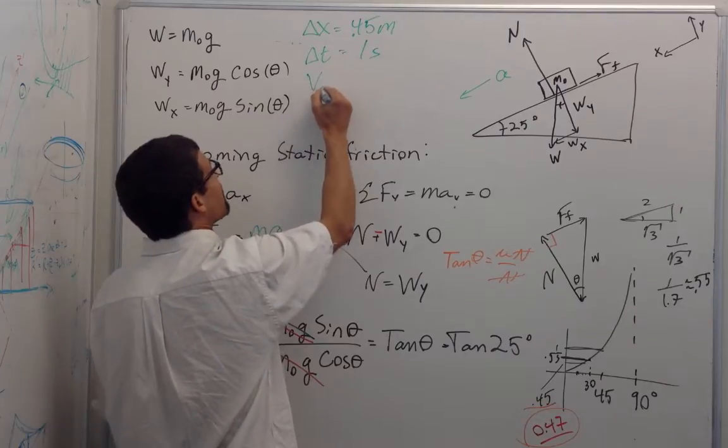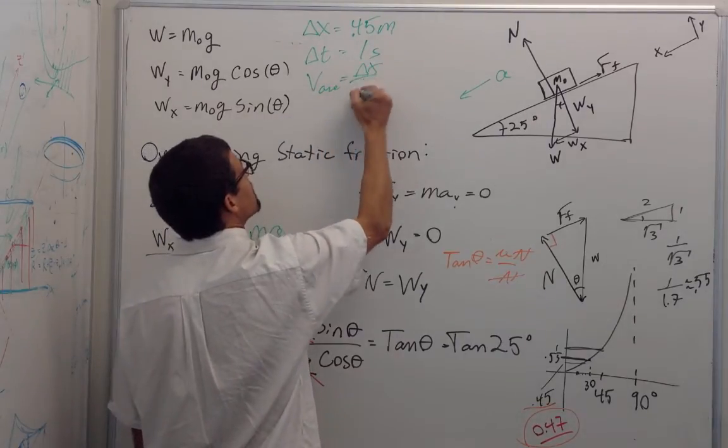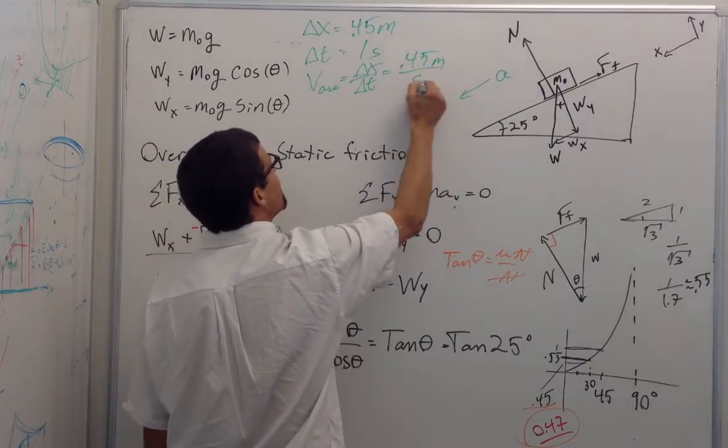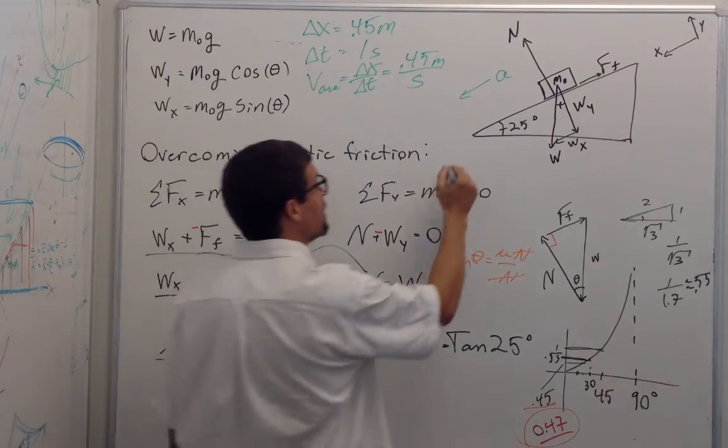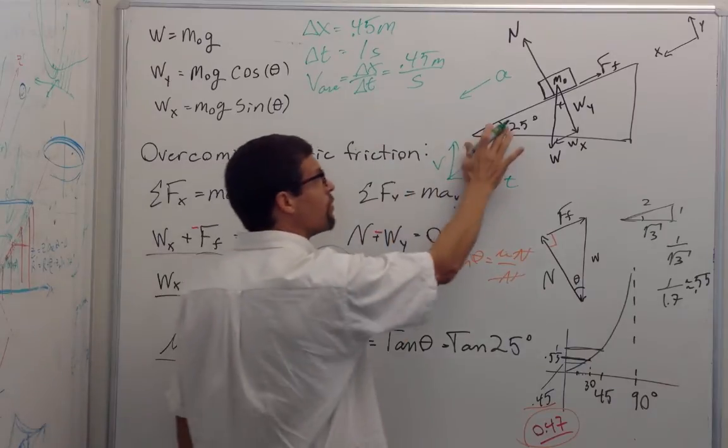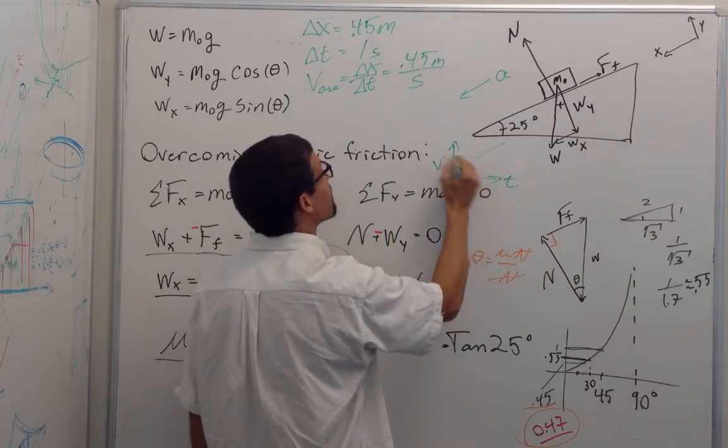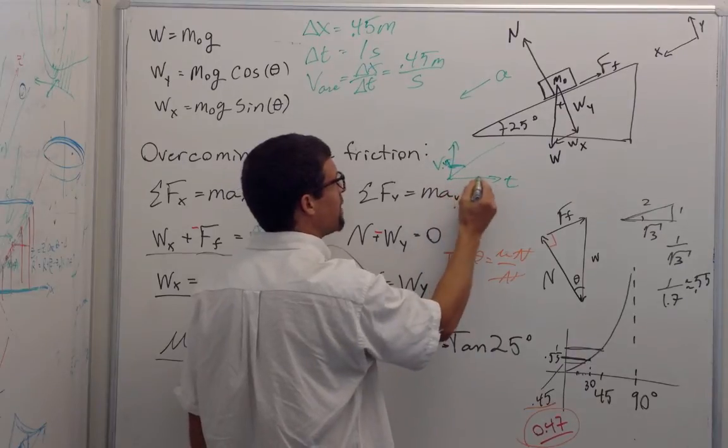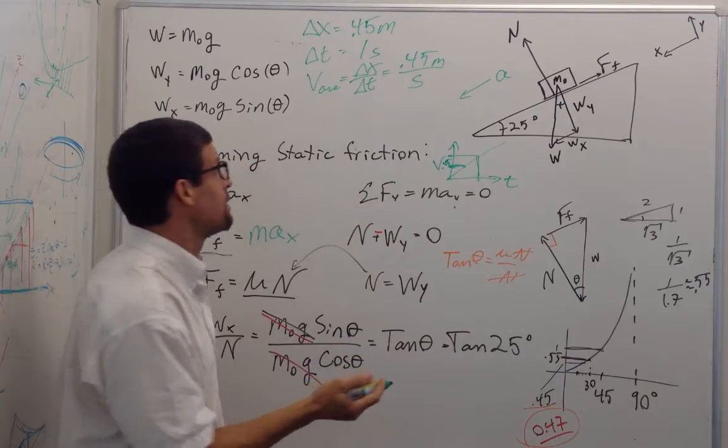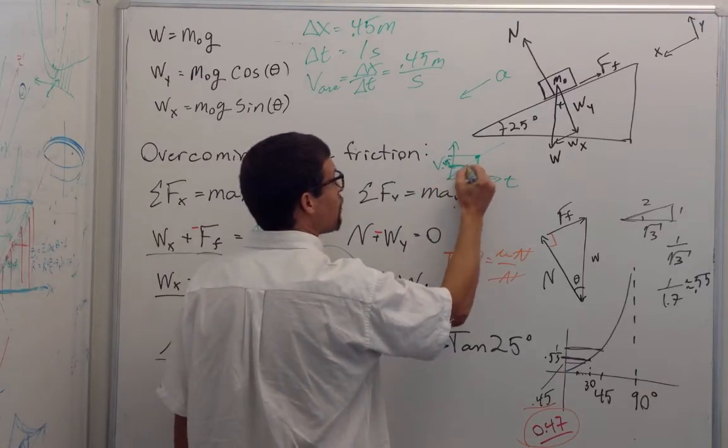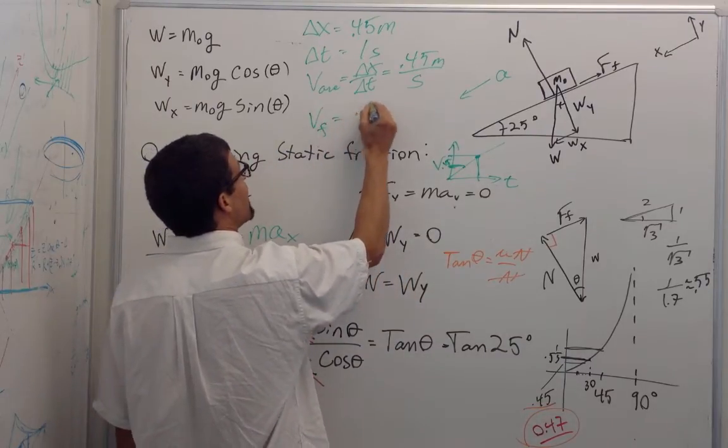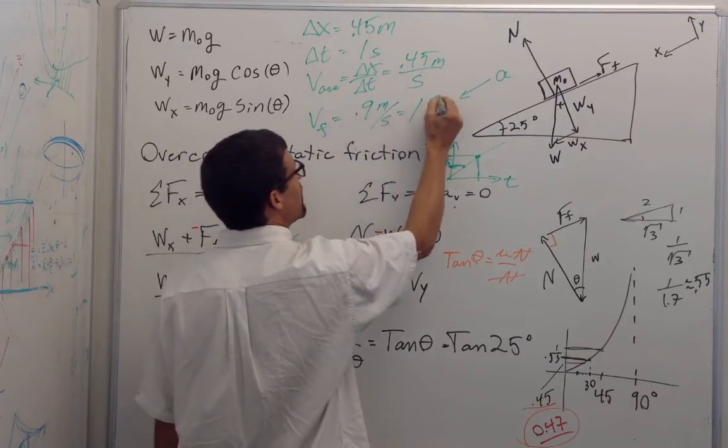So the average velocity is going to be delta x over delta t is just 0.45 meters per second. Now, if I were to look at the velocity versus time graph, I know that I should have constant acceleration, so the slope should be constant. And if the average velocity is 0.45 meters per second, the final velocity at the end of the trip should be twice that. Because I start at zero, I finish at twice the average velocity. And so velocity final should be about 0.9 meters per second. I'm going to round that to 1 meter per second.